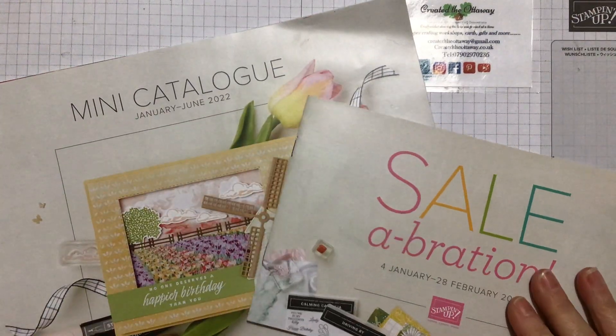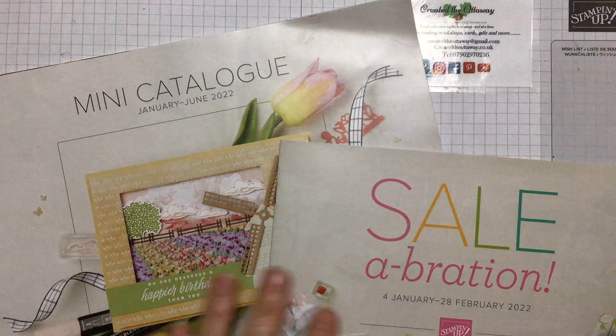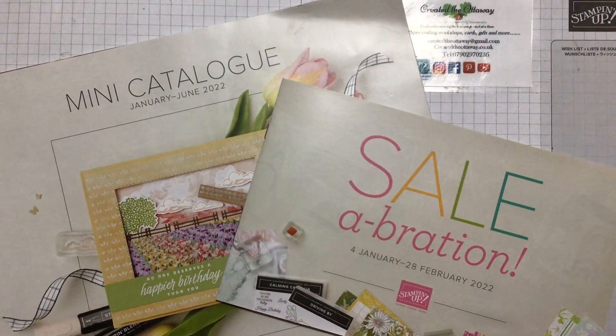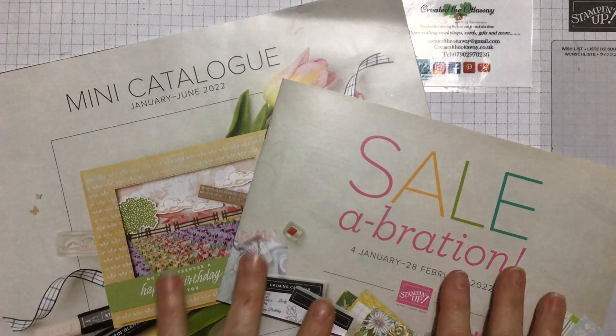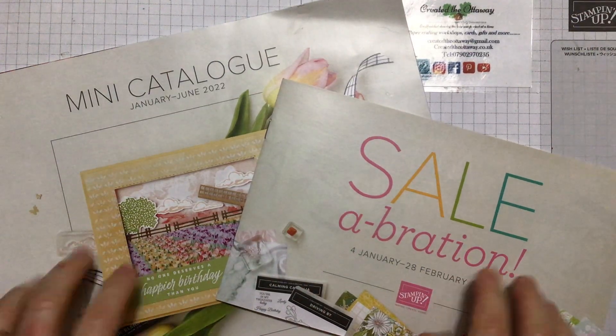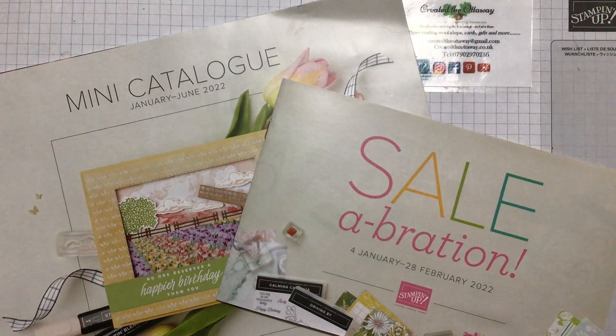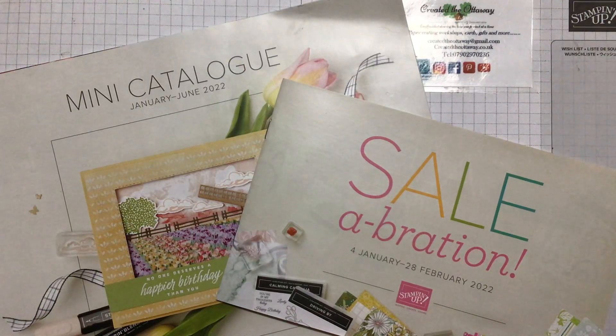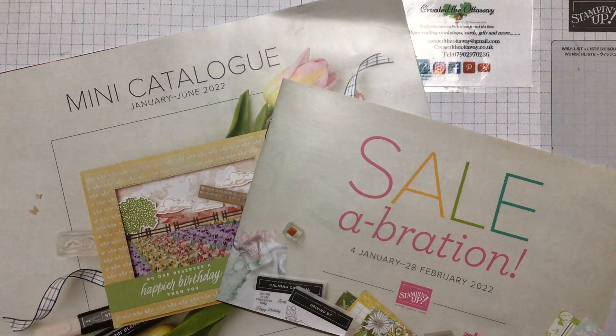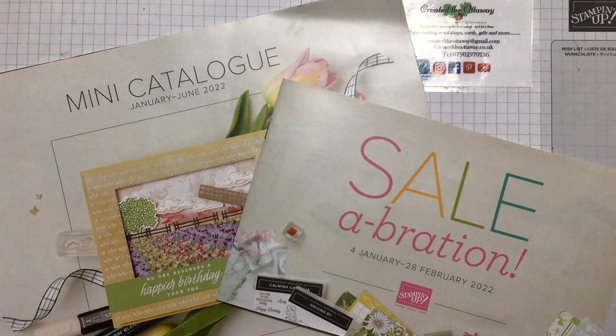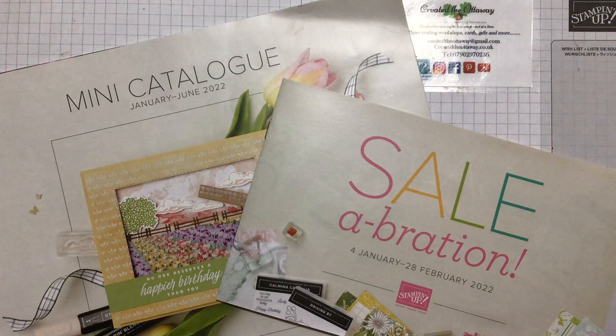Obviously there's a new catalogue out you may or may not know, and there's a Sale-a-bration brochure as well that you can earn several of the items for free. I've used something from both catalogues. If you're in the UK and particularly if you're in Kent, just get in touch. Look for me, Creative The Ottaway. If you're anywhere else in the world, have a look at Stampin' Up! demonstrators near you. It's a wonderful community perfect for any crafter. It's more like a family really. I really love it.